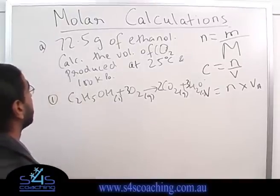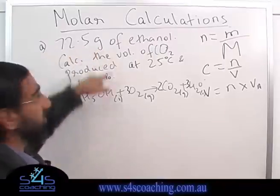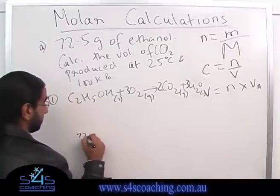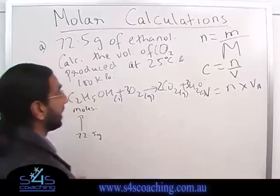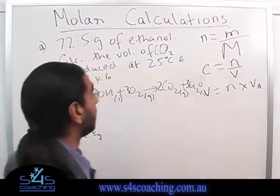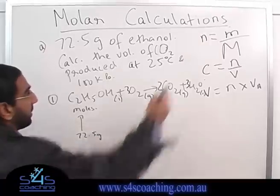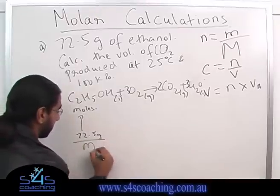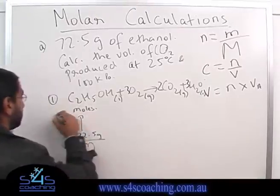Step two says convert what I have to moles. So what do I have? I have 72.5 grams. So what I need to do is I need to convert 72.5 grams into moles. How will I do that? I will use this formula. Alright, so I'll find the molecular mass of ethanol and I'll divide it by the molecular mass of ethanol and I'll get the moles of ethanol. Alright, so that is my step two.